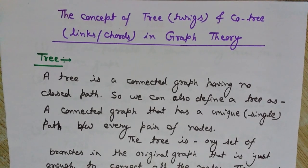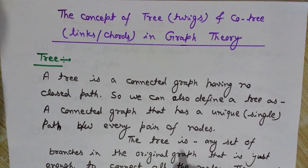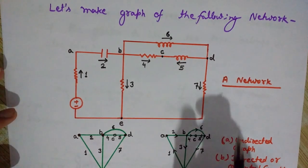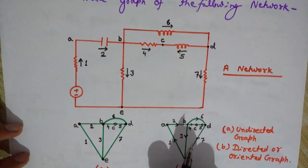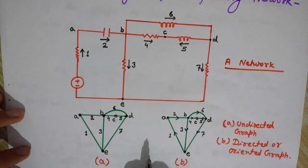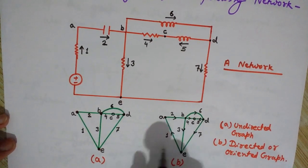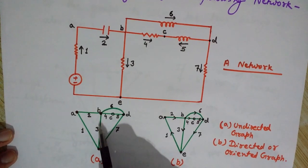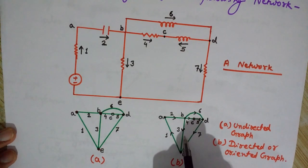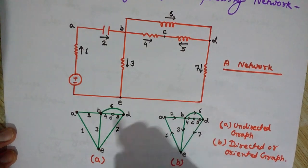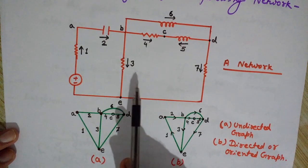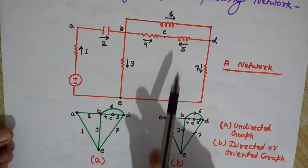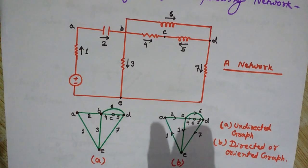Let us use a network and its graph to explain. Here we have two representations of the same graph: one is the unoriented or undirected graph, and the other is the directed or oriented graph. We now understand how to make a graph of a network, so it is time to understand the concept of a tree.